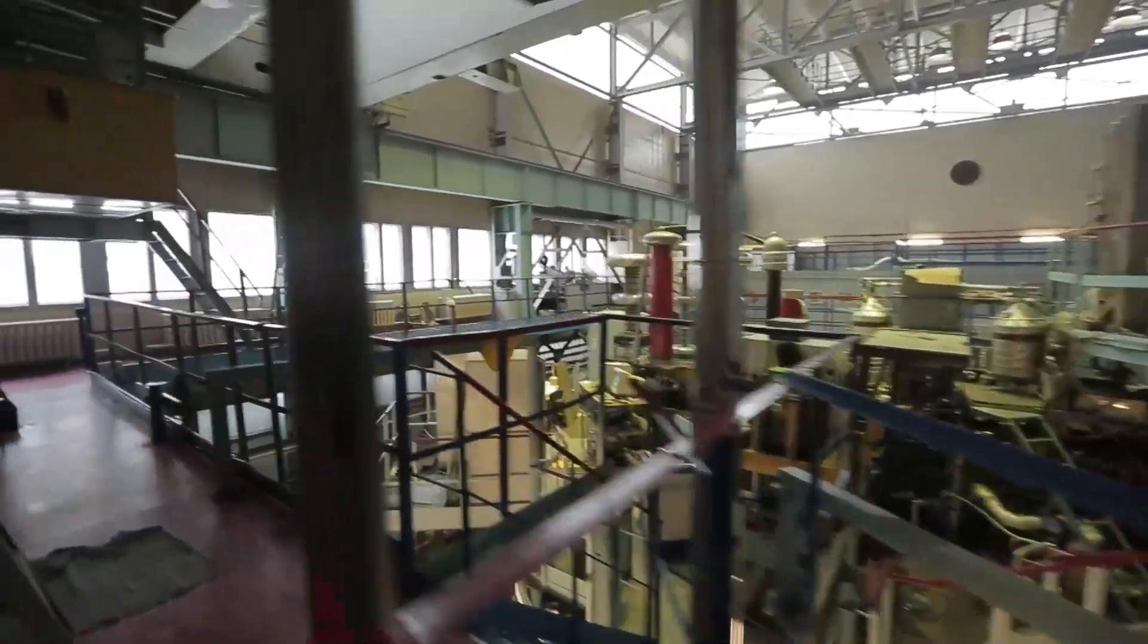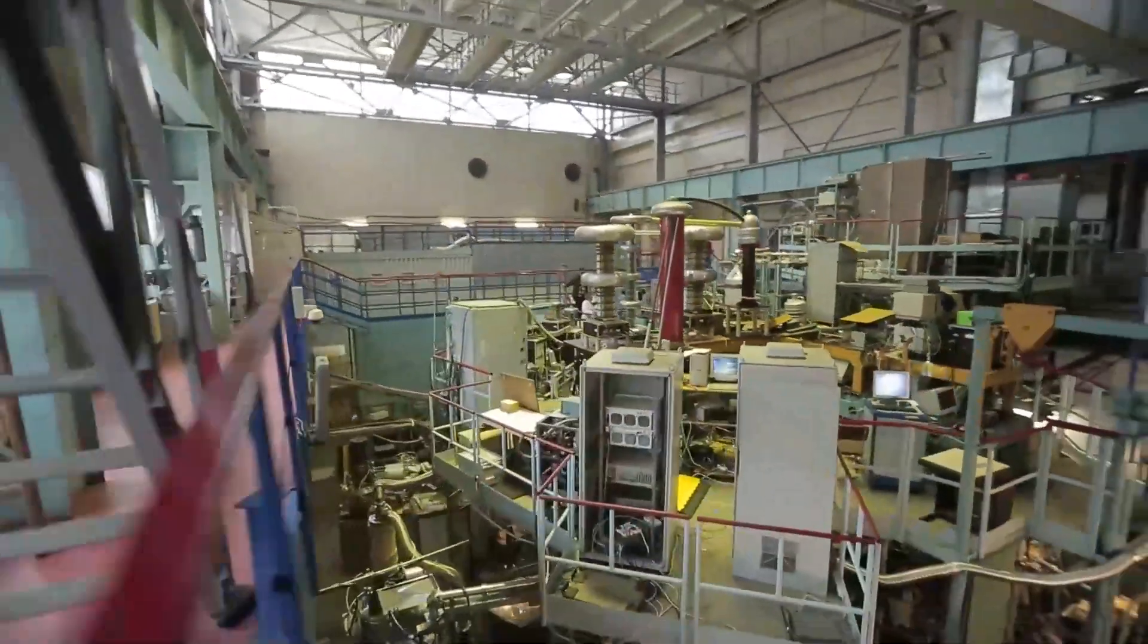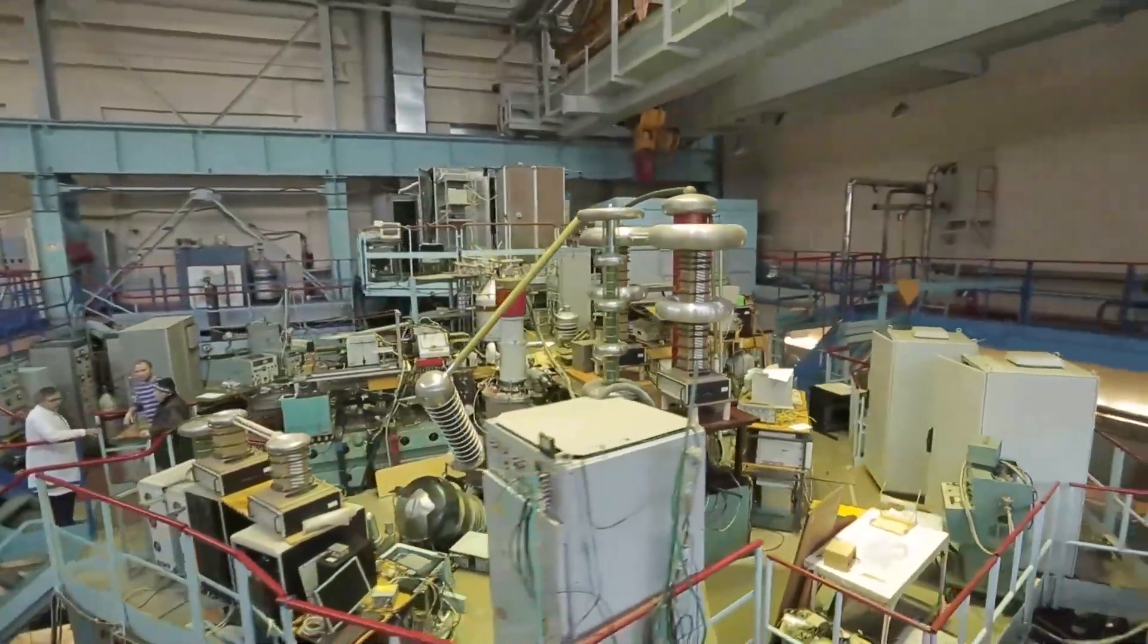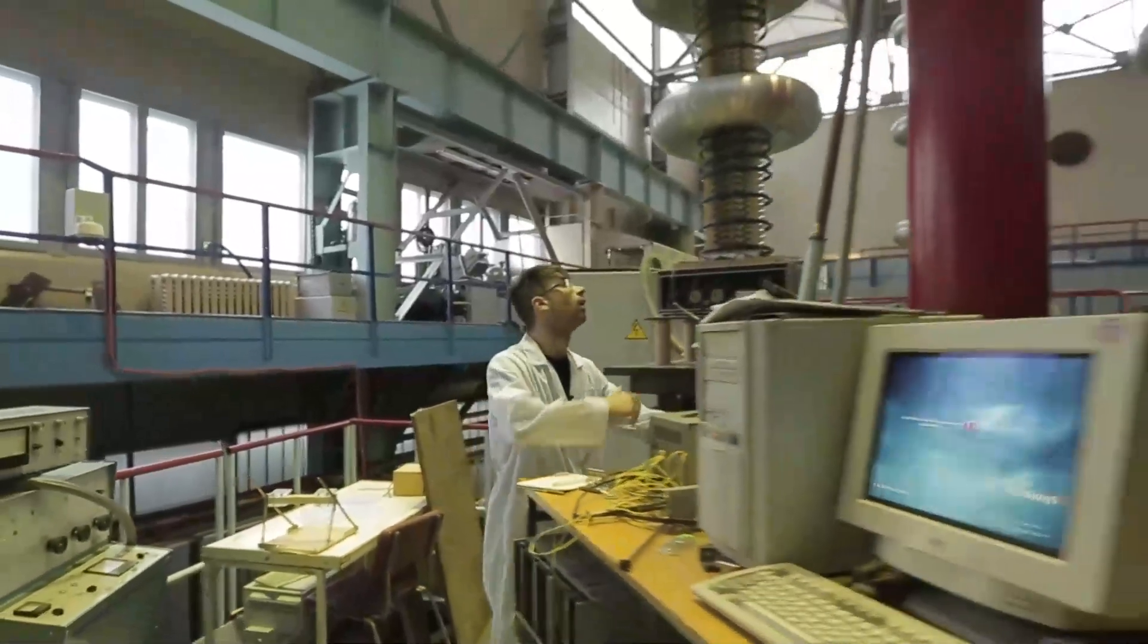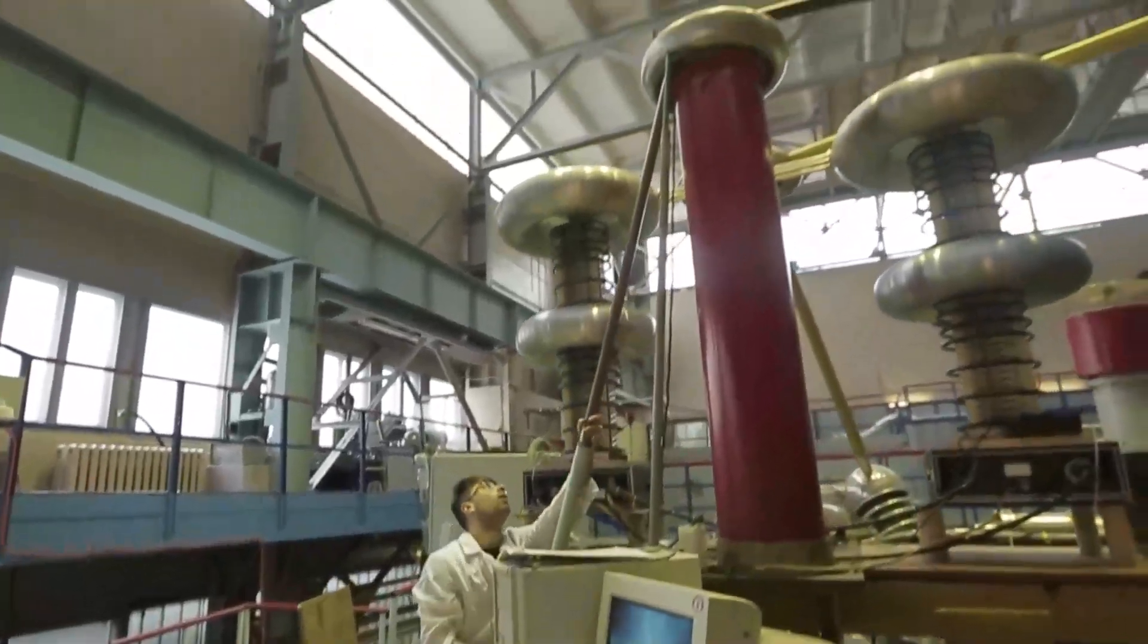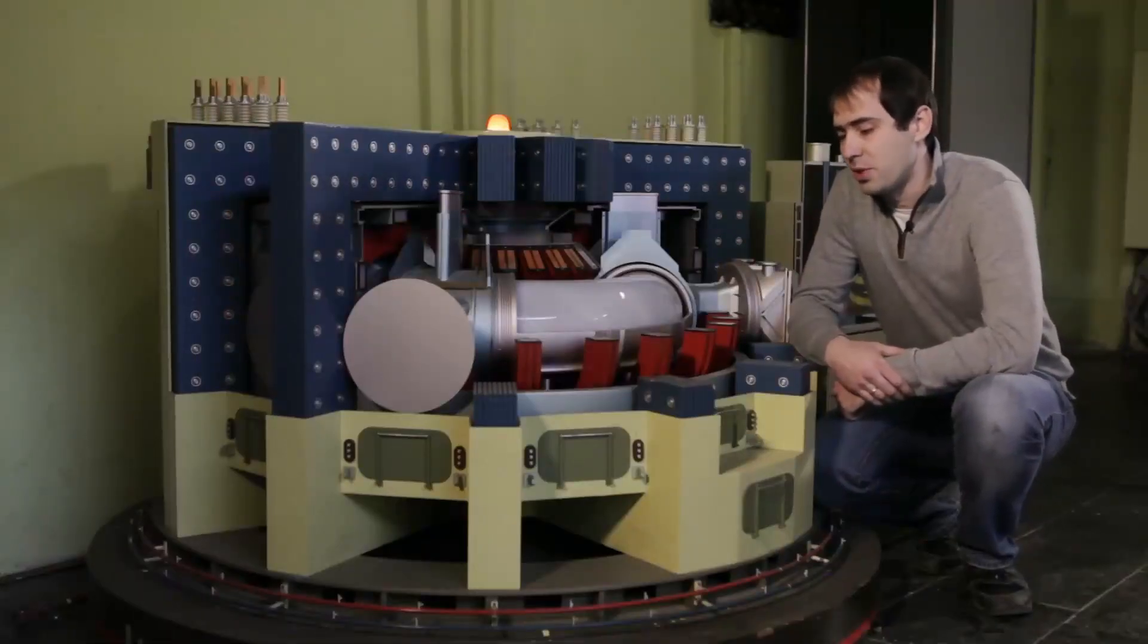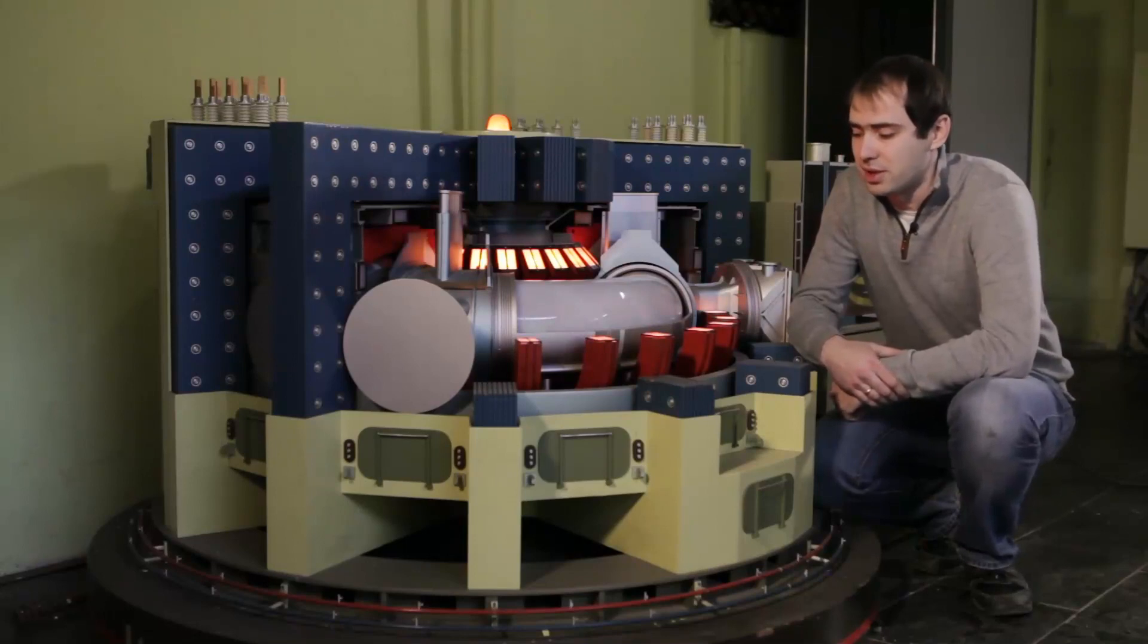Regardless of the fact that the T-10 Tokamak is a massive structure with a height of almost two stories, it cannot be called a full-scale thermonuclear reactor. This is still an experimental installation, albeit with a relatively complicated principle of operation. Let's consider the main processes that take place here for the achievement of the thermonuclear reaction.